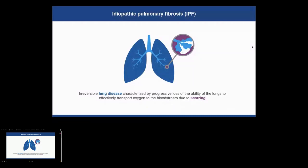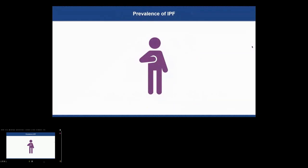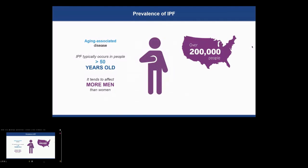IPF is an aging-associated disease that occurs in people older than 50, affecting more men than women. Approximately 200,000 people in the United States are affected by IPF, and this number is increasing every year.